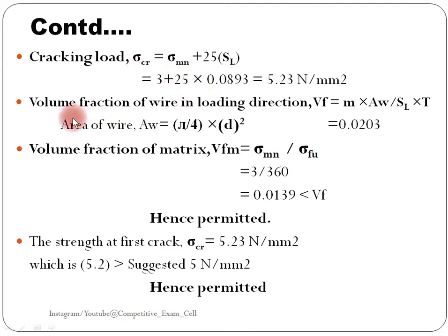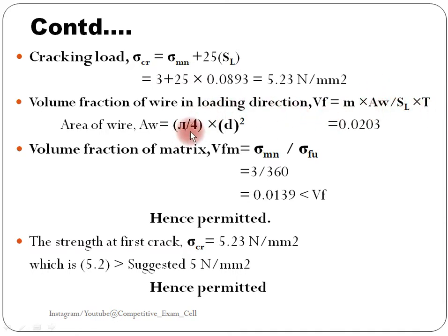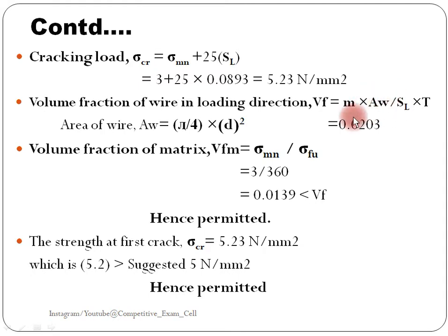Next is the volume fraction of wire in the loading direction, vf. This can be calculated using the formula: m times aw (area of a single wire) divided by specific surface times thickness. The area of wire aw is calculated using pi/4 times d². The wire has a circular cross section. Put the values — m is the number of layers (4) — and we get volume fraction vf equal to 0.0203.